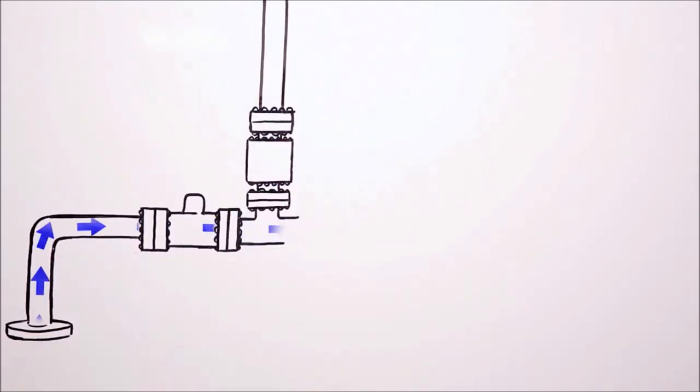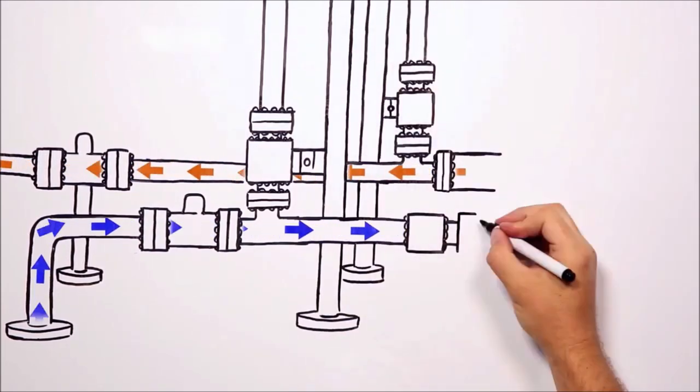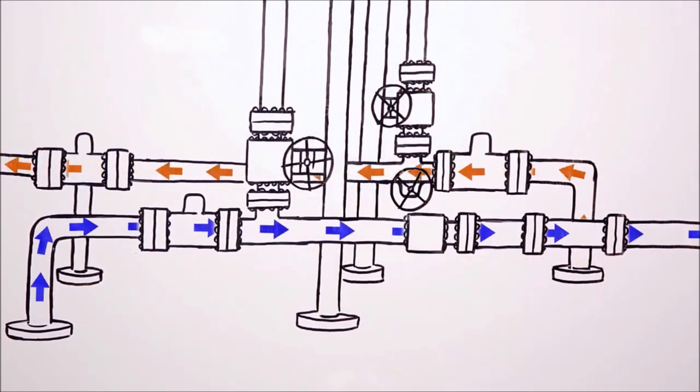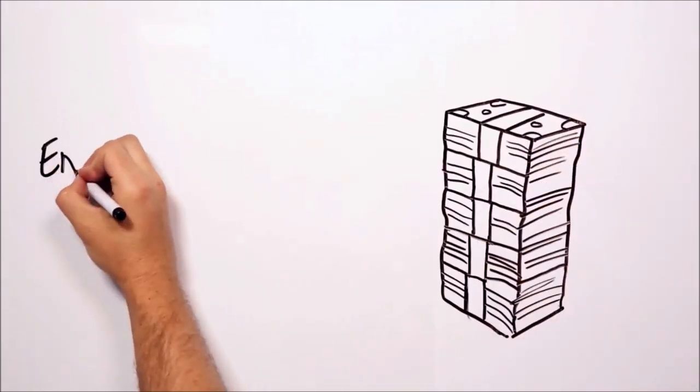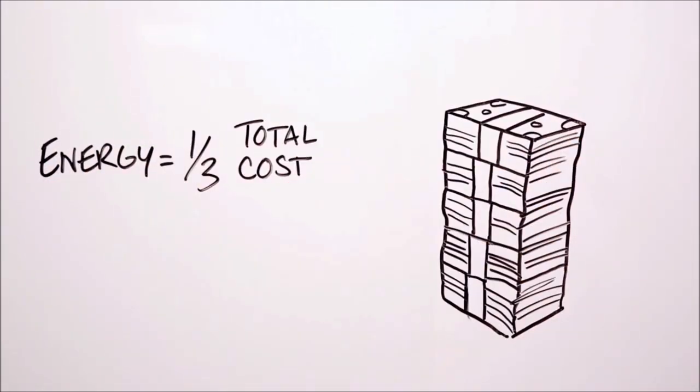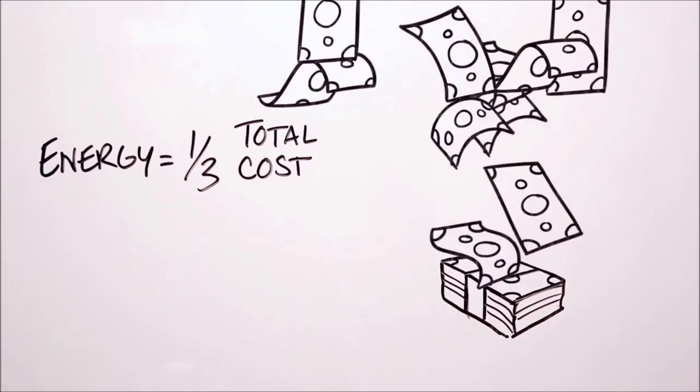He manages multiple feed lines for varying types of gases. They're difficult to measure because of compressibility and the effects of temperature and pressure. They're also critical to manage since energy accounts for a third of the total cost of a typical chemical plant, and he wants to assure the plant is getting everything they're paying for.